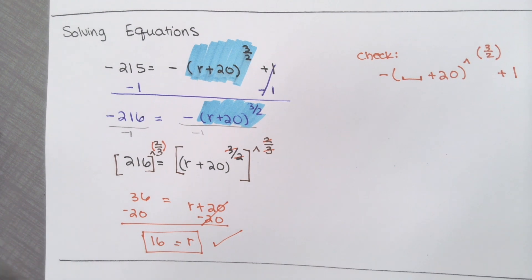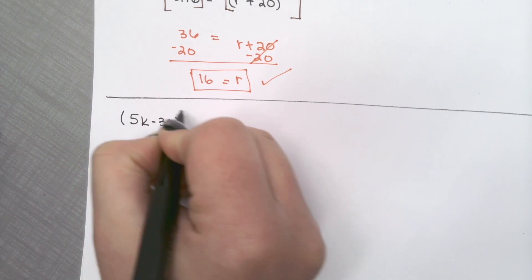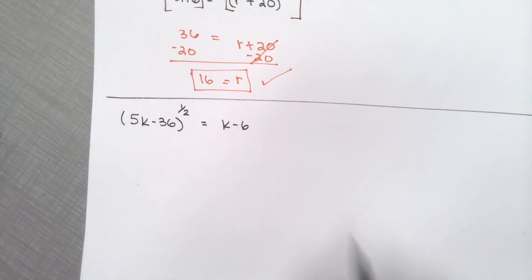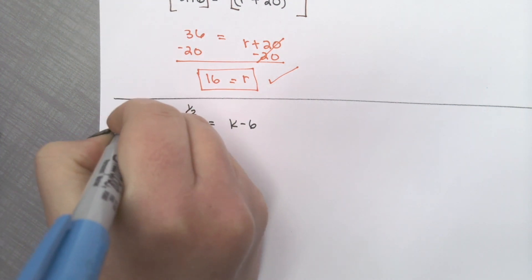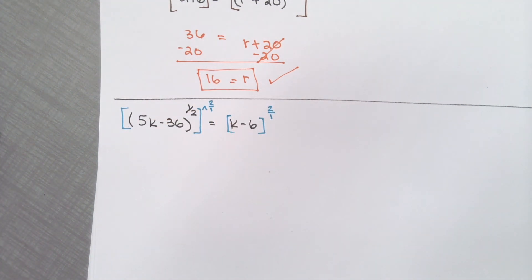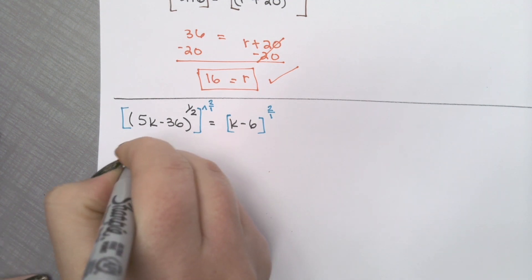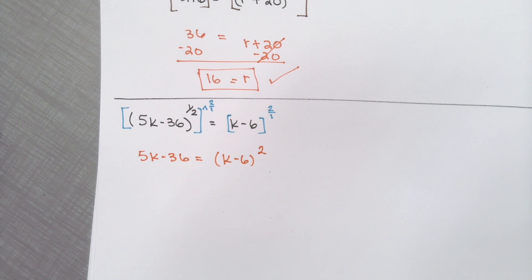Let's go ahead and move on to the next solving equation. We have 5k minus 36 raised to the 1 half power is equal to k minus 6. Be extremely careful when you see rational exponents and radicals. A lot of times when you have variables and numbers, it ends up being a binomial. So we're going to raise both sides to the reciprocal power of 2 over 1. On the left-hand side, the 2's go away, the 1's go away, we're just left with 5k minus 36. However, on the right-hand side, this is where your mind will play tricks on you — this is a binomial squared.